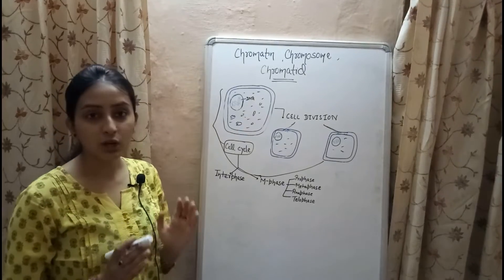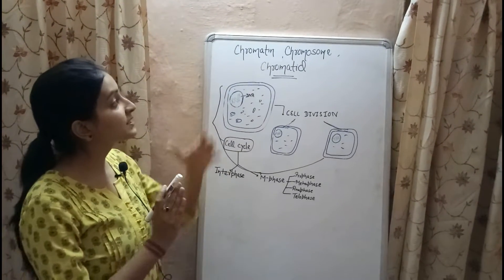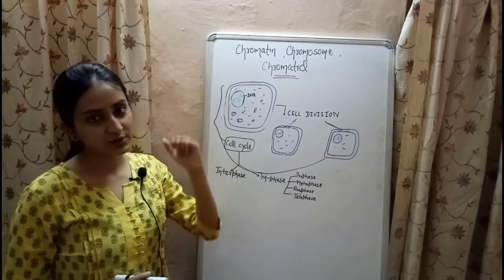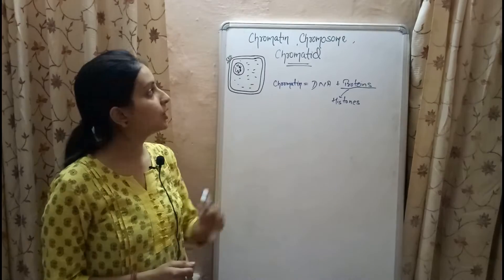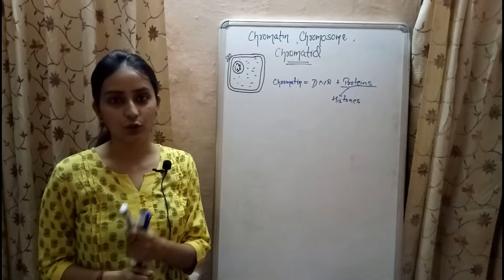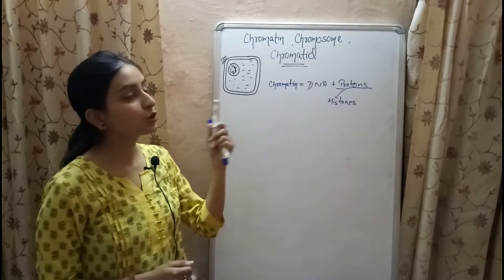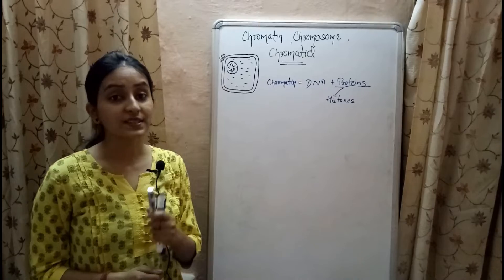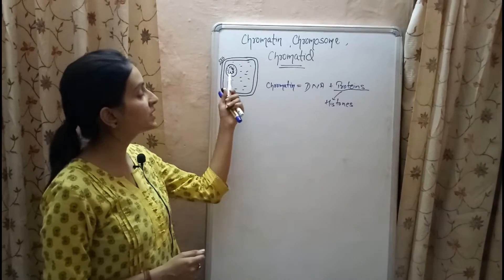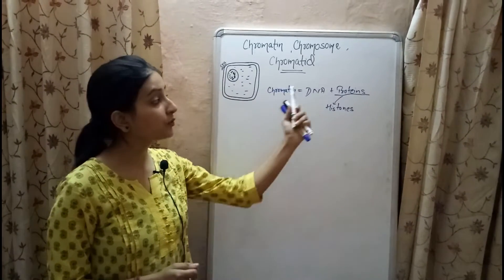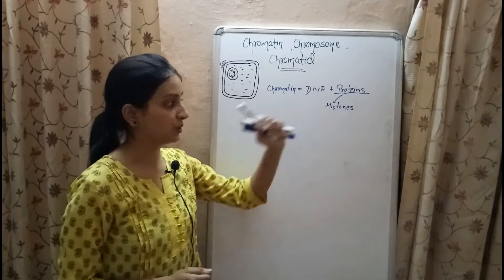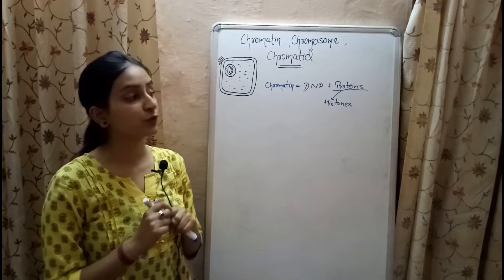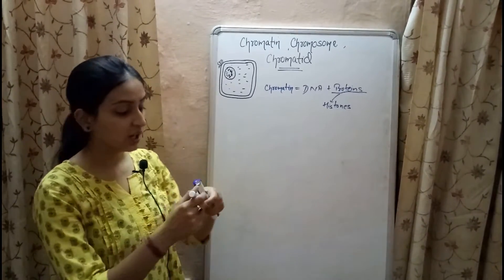That's all about the introduction. Now let's come to our main topics — chromatin, chromosomes, and chromatids. Chromatin are the complex macromolecules present inside the nucleus of a cell. They consist of DNA and proteins. The primary proteins of chromatin are known as histones.